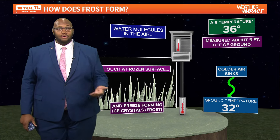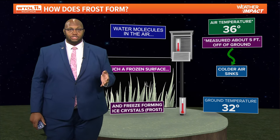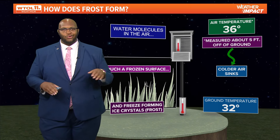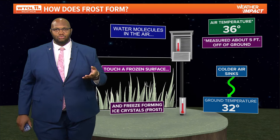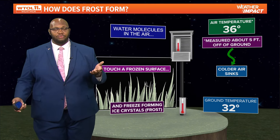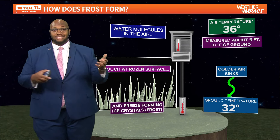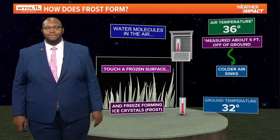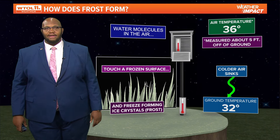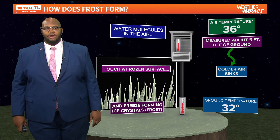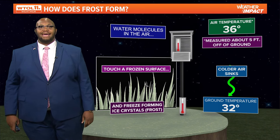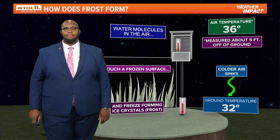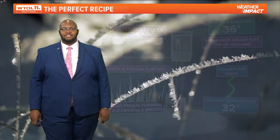Typically in the morning — even during summer mornings — you'll see dew on the grass. That's essentially what frost is: when it gets cold, that dew on the grass becomes the frost and freeze we see on crops and plants.